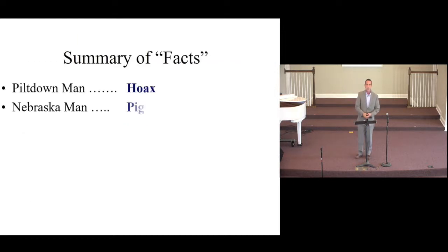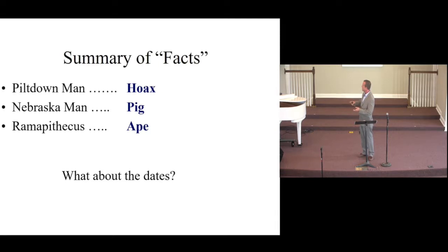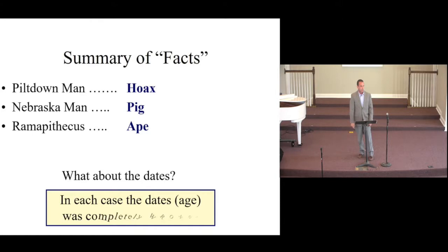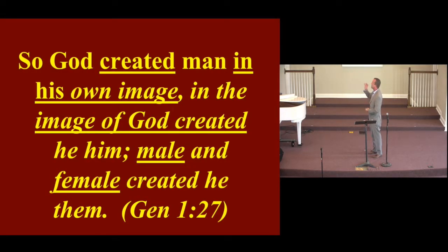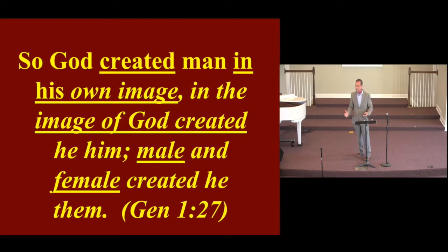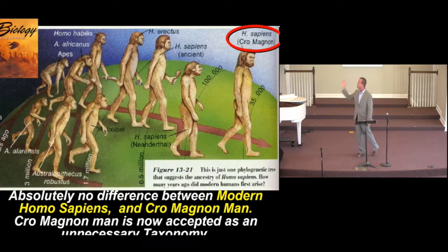Piltdown Man was a hoax, Nebraska Man was a pig, and Rampithecus was an ape. But where did the dates come from — 500,000 years, a million years, 14 million years? They were fabricated. They were made up to prove their religion, and they broke down under scrutiny or additional information. Because we already know: God created man in his own image — male and female he created them. Clearly there's no evolution here. But let's get back to the diagram.